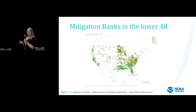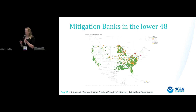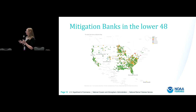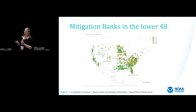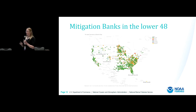Banks are concentrated in areas with high development. One of the first problems was people restoring farmed wetlands in the middle of nowhere where there was no market for their credits because nobody was developing wetlands nearby. That's why under the 2008 rule, if you want to start a mitigation bank, part of what you need to submit to the Corps is a market analysis.